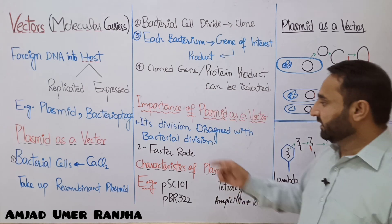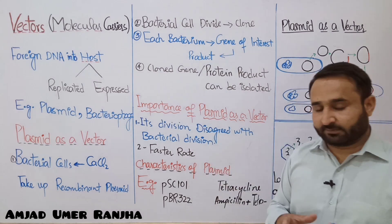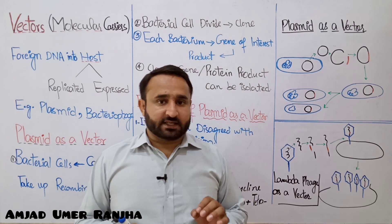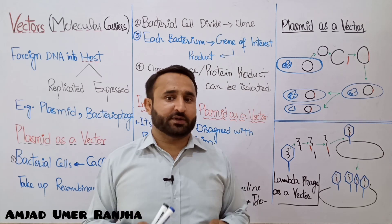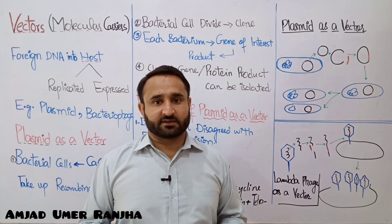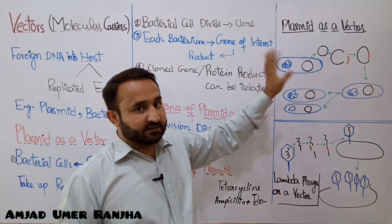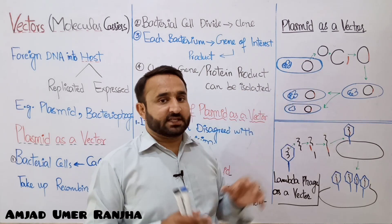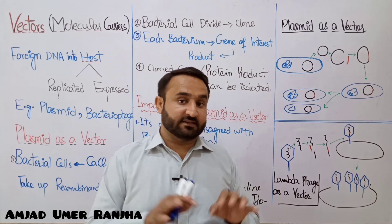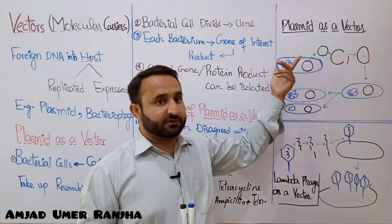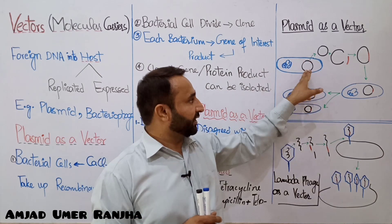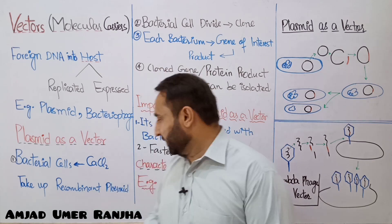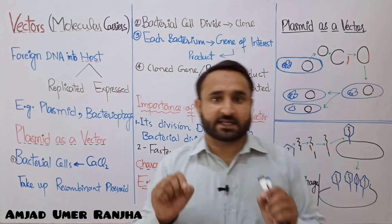An important feature of plasmid as a vector is that its division is independent of — it disagrees with — bacterial chromosomal division. Bacteria always have one chromosomal DNA; they are haploid prokaryotic cells. The plasmid is the extra-chromosomal circular DNA other than this chromosomal DNA. Plasmid can divide rapidly and independently, so the gene of interest inserted in it can replicate faster than bacterial chromosomal division.